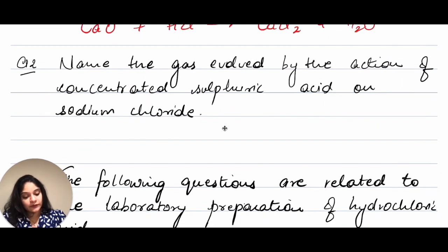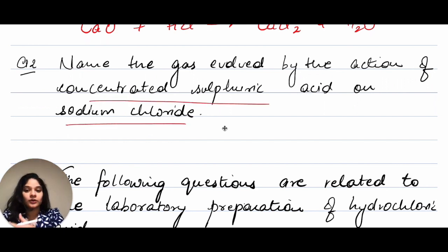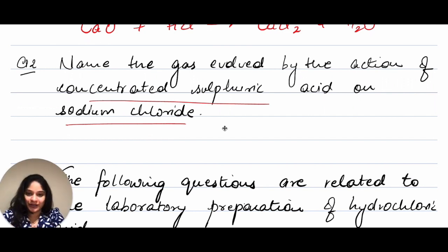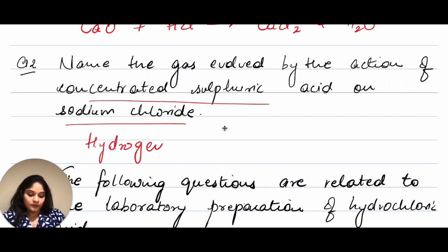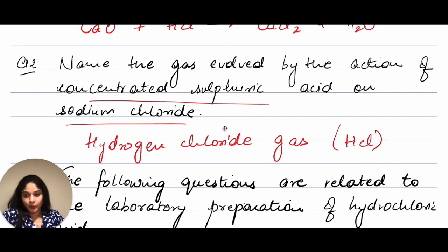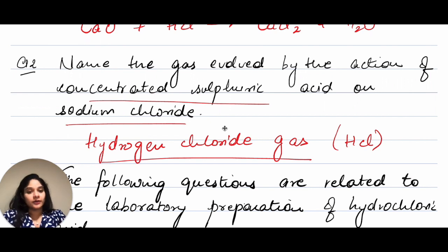The next question: name the gas evolved by the action of concentrated sulfuric acid on sodium chloride. If you have read the chapter you would know it is hydrogen chloride gas. When you do it in exams, you should know it by looking at the reaction. The answer is hydrogen chloride gas. I would never suggest writing just HCl in the answer because that is not acceptable by the board — always write the entire name of the compound and mention the formula in brackets. If you write just the formula you would lose marks.